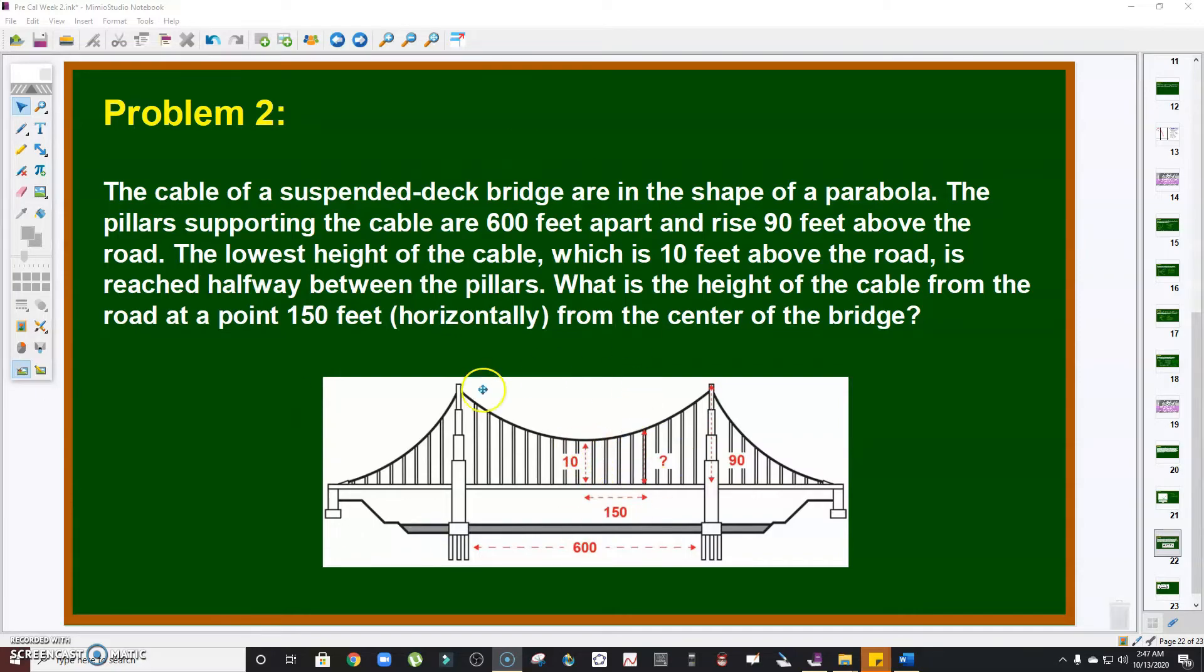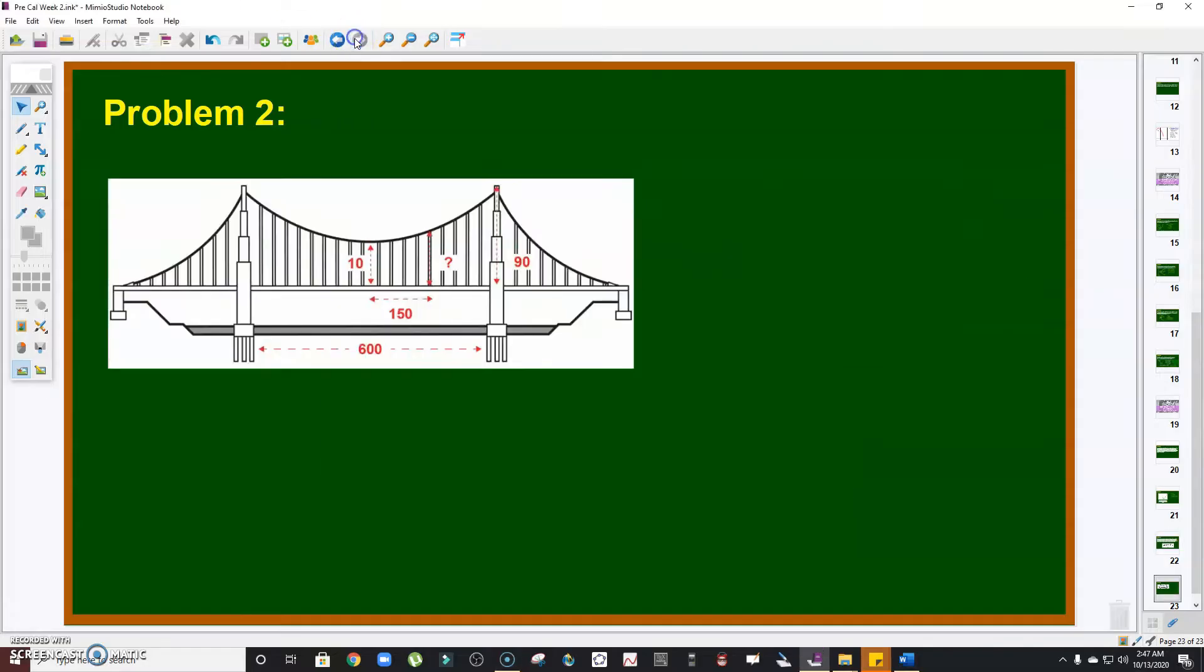So that's the illustration. The pillars are 600 feet apart. This is the road or the bridge. This is 90 feet, the height of the pillar. The lowest point is 10 feet above the road. Now the question is: how high is the cable if it's 150 feet from the center of the bridge?